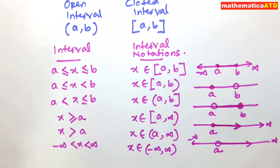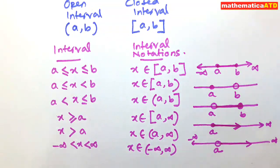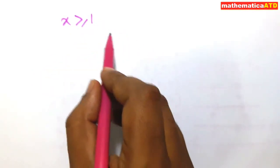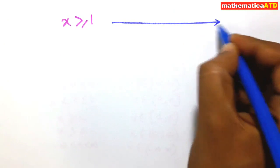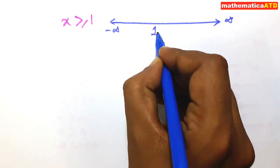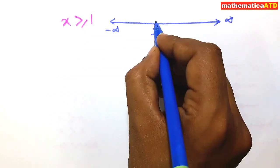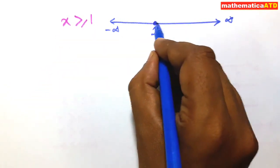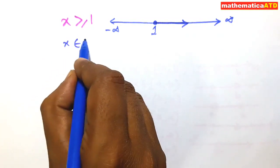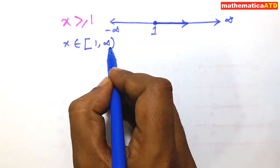Now we take some specific examples. First, consider x ≥ 1. We draw a real line from negative infinity to positive infinity and mark the point 1. Since x = 1 is included, we darken this point. Since x > 1, we also darken all values to the right of 1. In interval notation this is written as x belongs to the semi-closed interval [1, ∞).